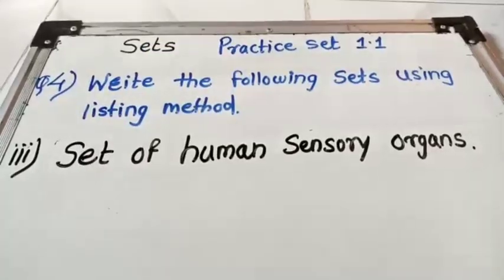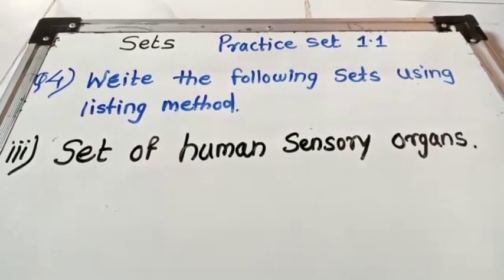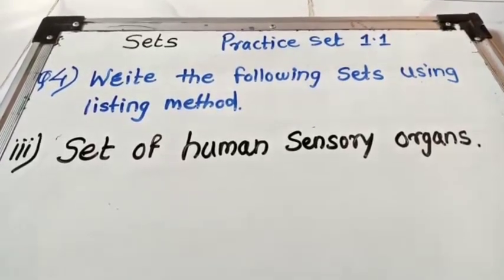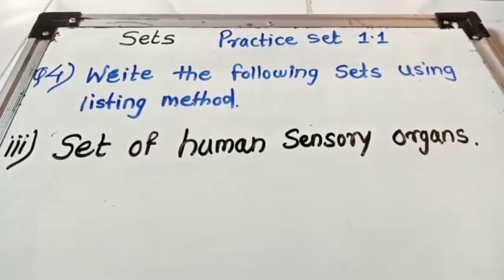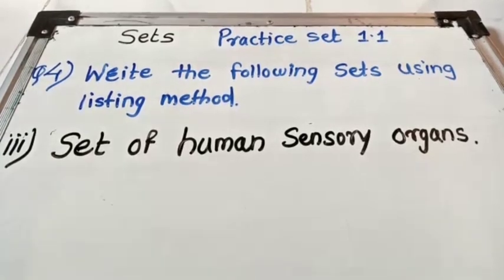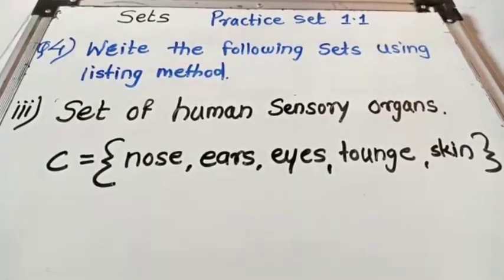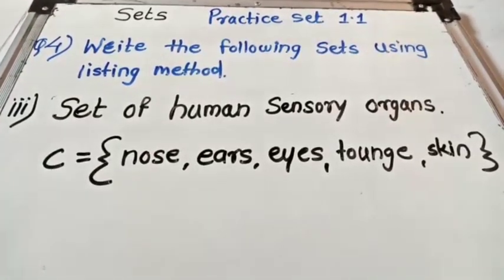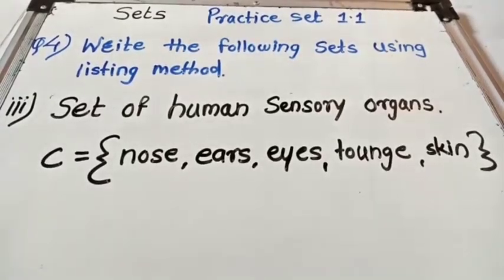Next example: set of human sensory organs. The answer is C = {Nose, Ears, Eyes, Tongue, Skin}.